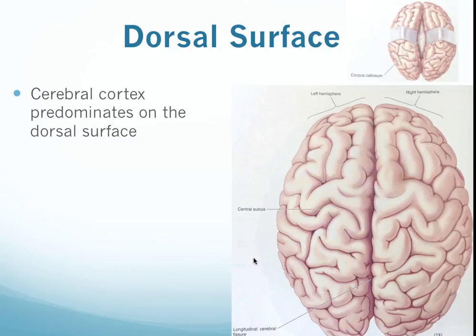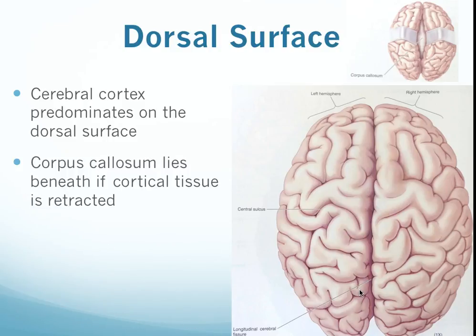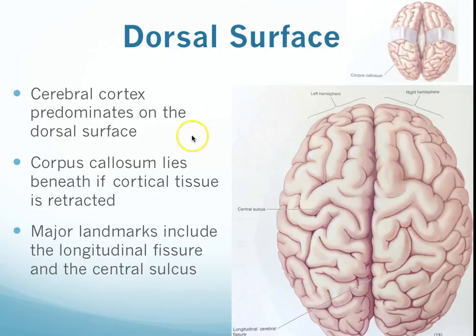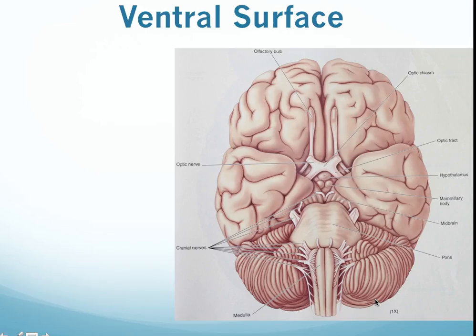If we look at the dorsal surface of the brain, we have all this cerebral cortical tissue — the whole outside of our brain is cortex. If we were to take clamps and peel back the cortical tissue starting from the central line, this white material underneath is actually the corpus callosum. Looking from the top with the cortex peeled back, you can see the corpus callosum comes across the entire region — it traverses both sides. And here we have this longitudinal fissure that goes right through the middle — this is the division point between the left and right hemispheres of the brain.